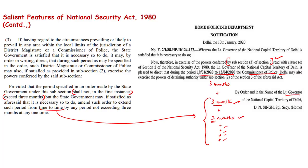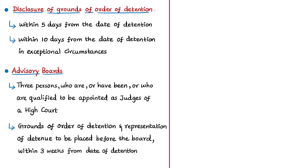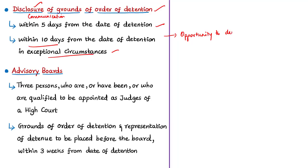Regarding disclosure of grounds of detention order to affected persons: when a person is detained, the grounds on which the detention order was made must be communicated to them as soon as possible, within five days from the date of detention. In exceptional circumstances, the communication must be made within ten days. The authority making the order shall also give the detainee an opportunity to make representation against the order to the appropriate government.